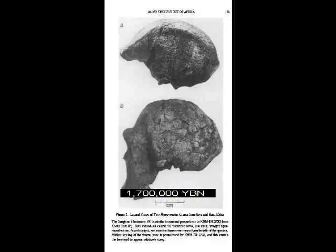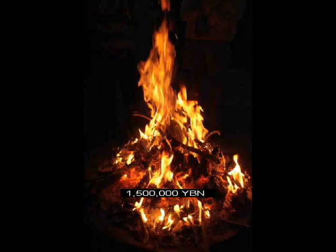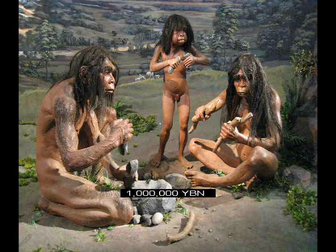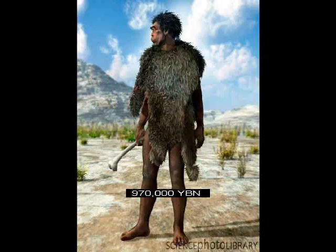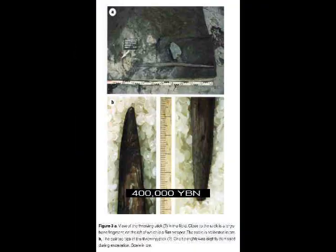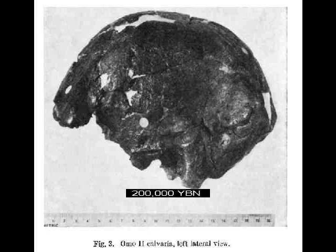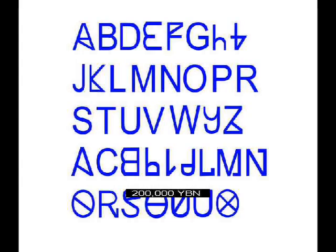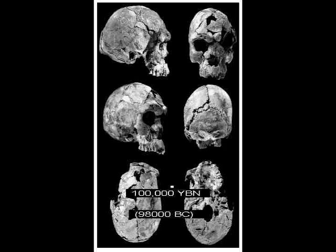Homo erectus. Erectus moves into Eurasia. Controlled use of fire. Erectus evolves less body hair. Hominids wear clothing. Spear. Humans. Homo sapiens. The 30 sounds of human language.